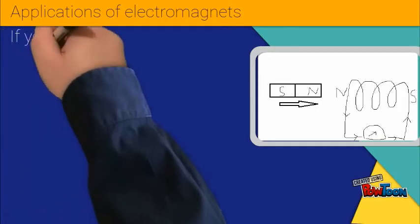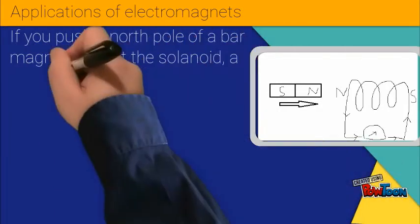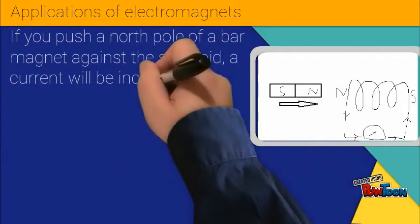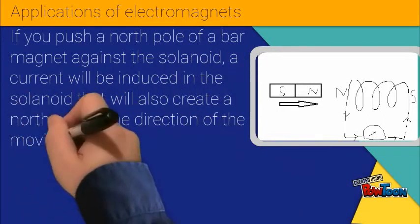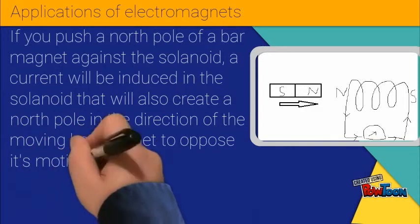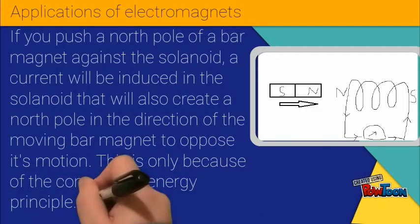To put this simply, if you push the north pole of a bar magnet against the solenoid, a current will be induced in the solenoid that will also create a north pole in the direction of the moving bar magnet to oppose its motion. This is only because of the conservation of energy principle.